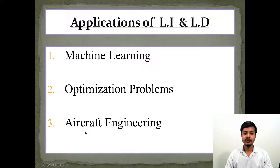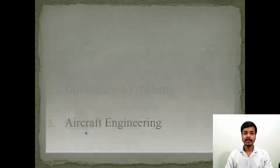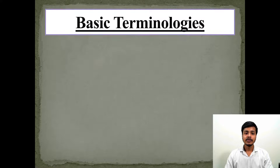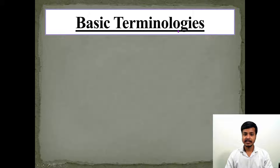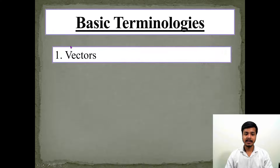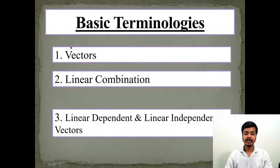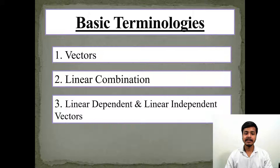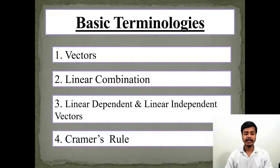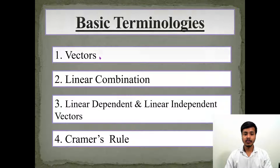Now, to learn the topic in this video, we need some terminologies. These terminologies are: vectors, linear combination, linear dependence and linear independence of vectors, and Cramer's rule. These are the four basic prerequisites needed to understand the topic. Let us see one by one, starting with what is a vector.